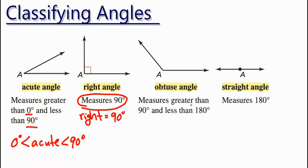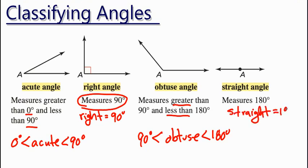An obtuse angle is greater than 90, less than 180. Greater than 90, less than 180. Again, no equal to. But a straight angle is equal to 180. So if angles fall in those measures, you should be able to identify them as acute, right, obtuse, or straight.